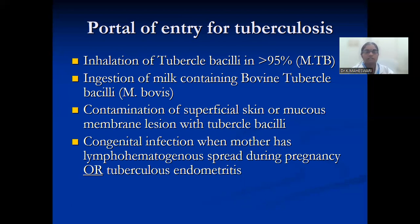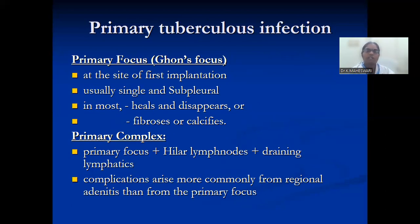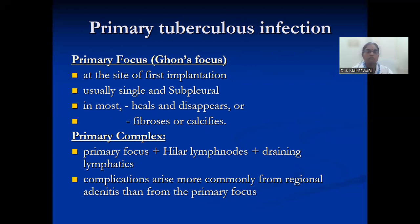Primary tuberculosis: the primary infection is called the Ghon focus, at the site of first implantation. It is usually single and sub-pleural. In most cases it heals, disappears, or undergoes fibrosis or calcification. The primary complex is the primary focus plus the hilar lymph nodes and the draining lymphatics. Complications arise most commonly from the regional adenitis rather than from the primary focus. Primary complex denotes the primary focus together with hilar lymph nodes and the draining lymphatics.